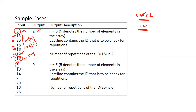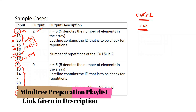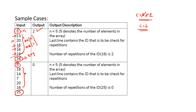For the second test case, n is 5 with elements [18, 14, 7, 20, 16] and key is 25. Count starts at 0. We check: 18, 14, 7, 20, 16 — none equal 25. Array exhausted, count is still 0, so we return 0. Now let's apply this logic in code: we create a counter variable initialized to 0, loop from the first to last element, check if the element at each index equals the key, increment counter if so, and finally return count.